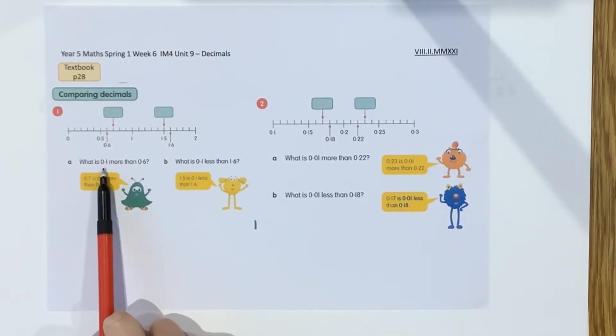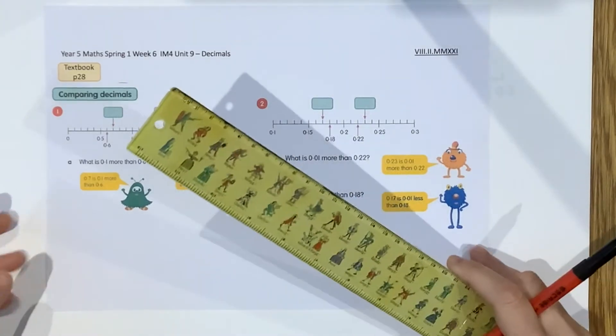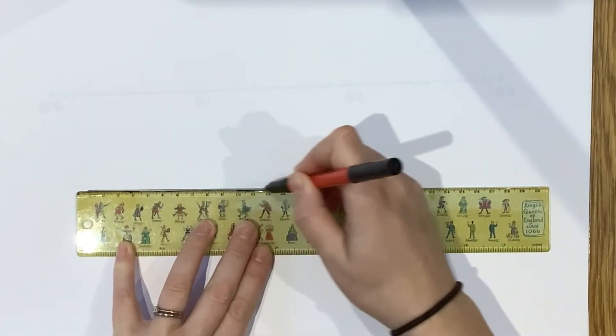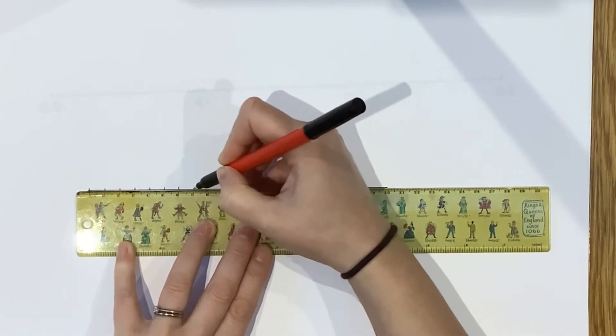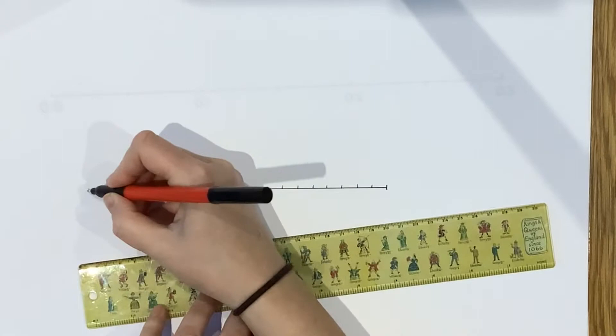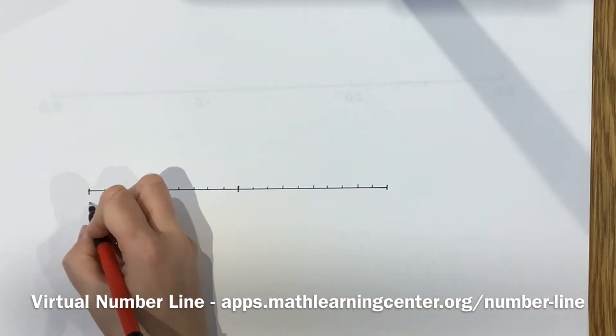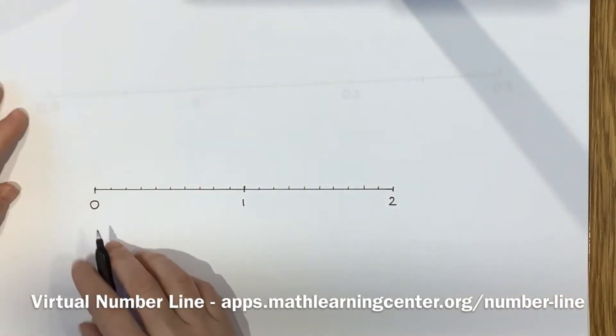Okay, so let's have a look then. The question is what is 0.1 more than 0.6? So we've got a number line here to show us. So at any point you can of course draw a number line. An easy way to draw a number line in tenths. If you've got a long ruler it helps. But if you think of 10 centimetres as being a whole one, for example. So if I draw a line that's 20 centimetres long.